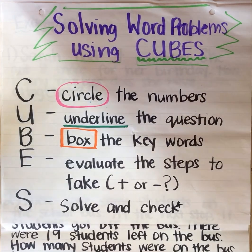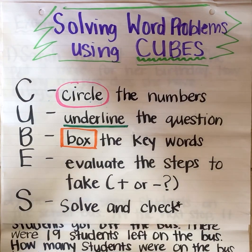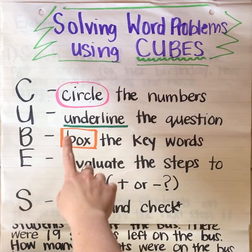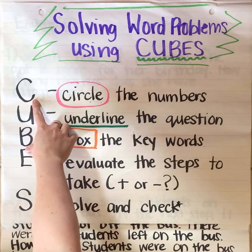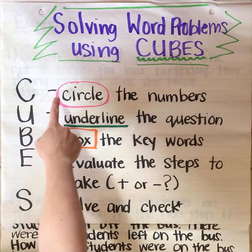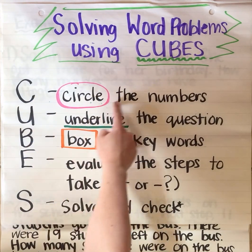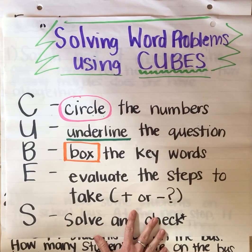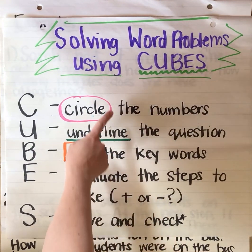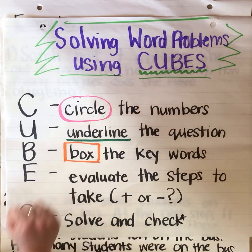So as you can see here, the C for cubes means circle the numbers. So when you're looking at the word problem you're going to circle all the numbers.